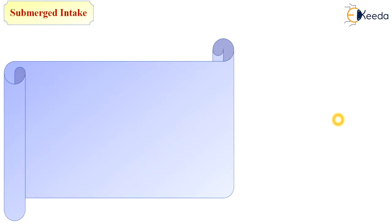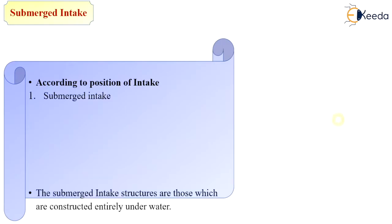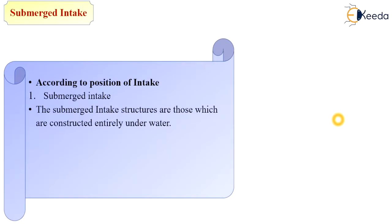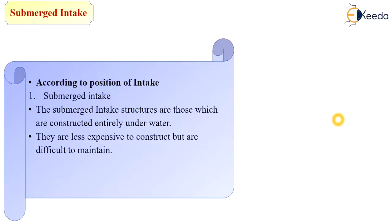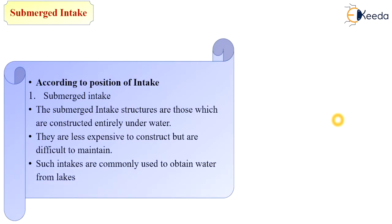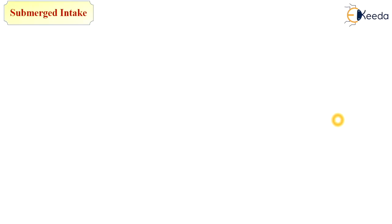First, depending on position, is the submerged intake. Submerged intake structures are those which are constructed entirely underwater. They are less expensive to construct but are difficult to maintain because the whole structure is underwater. Such intakes are commonly used to obtain water from lakes, when sufficient water is available to fulfill the capacity of the treatment plant.